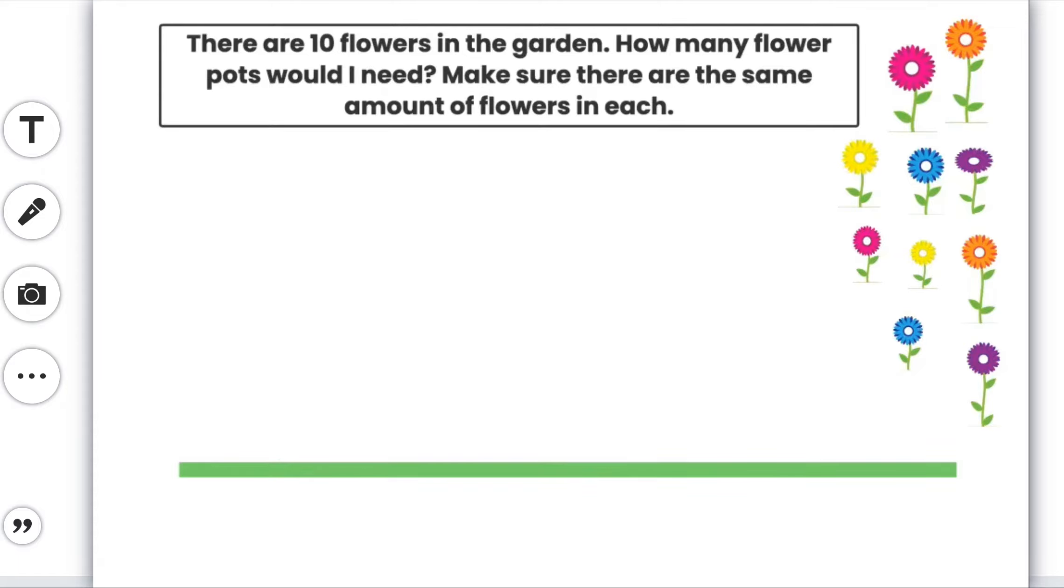All right so I'm going to think of another way now. I'm going to go back with my pencil and I'm going to try and do 2 flowers in each pot. So if I count by 2 on my fingers, 2, 4, 6, 8, 10. I think I might need 5 pots this time.